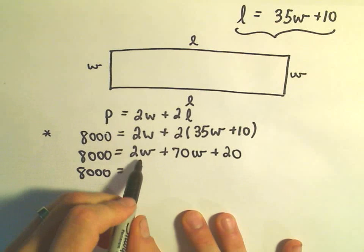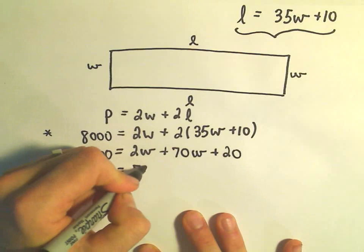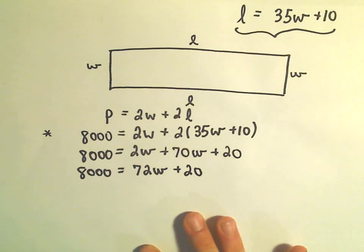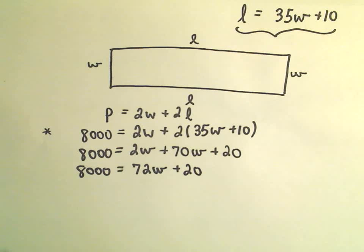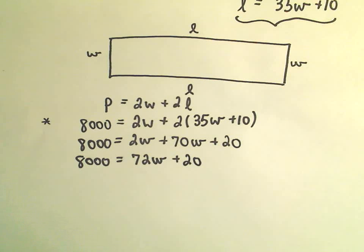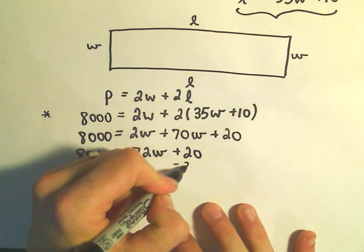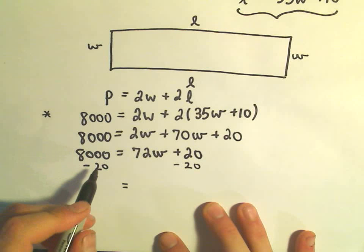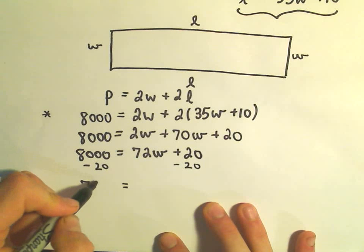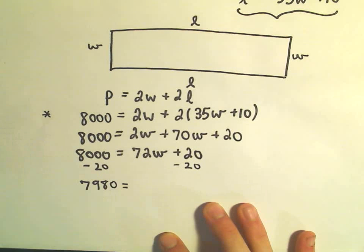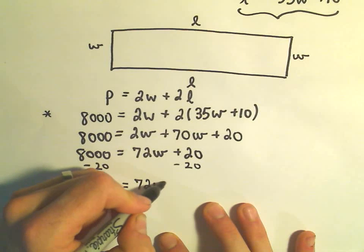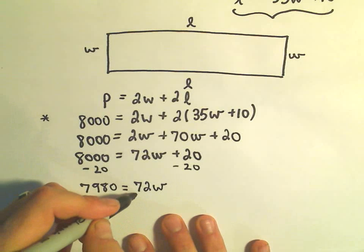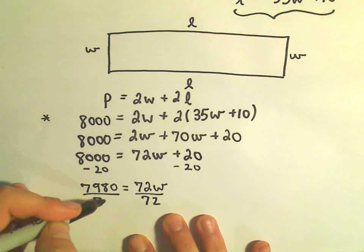On the right side, we have 2W plus 70W. That'll give us 72W plus 20. And I'm trying to solve for W, the width. So I'm going to simply subtract 20 from both sides. That way, I'll have my term involving W all by itself. So 8,000 minus 20 would be 7,980 equals 72W. And to solve for W, we'll simply divide both sides by 72.